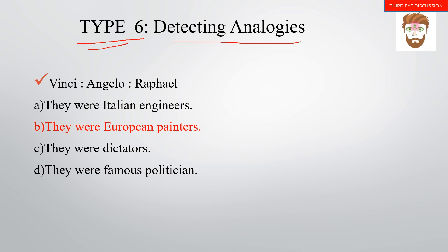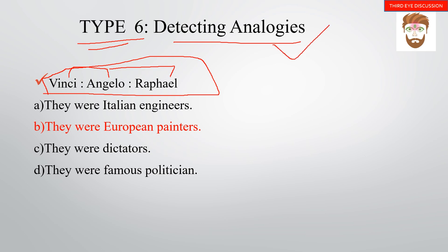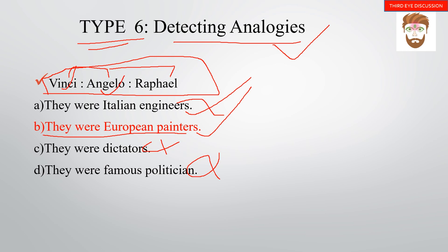Type 6 is detecting analogies. Here, we detect the relationship among three given items using general knowledge. For example: Italian, engineer — they are European painters. Leonardo da Vinci is a famous European painter known for the Mona Lisa. This type requires background GK knowledge.